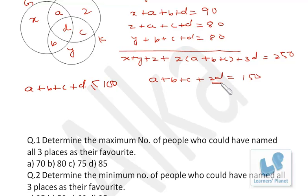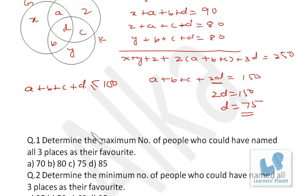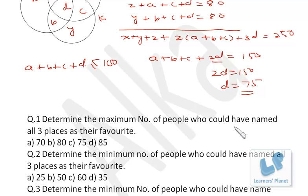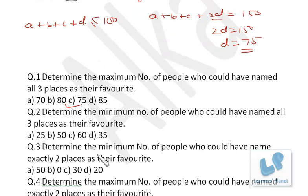To find the maximum value of d, we set a + b + c = 0, meaning nobody liked exactly two places. Then 2d = 150, so d = 75. The maximum number of people who could have named all three places is 75. Simultaneously, the minimum number of people who named exactly two places is 0, since a + b + c can be 0 when d is 75.